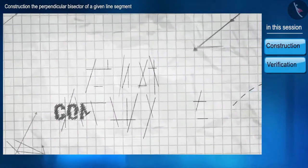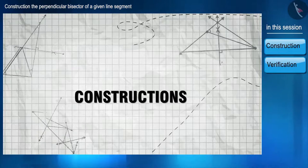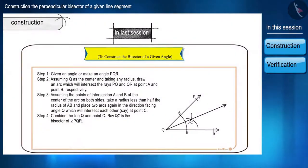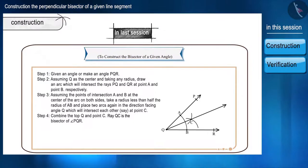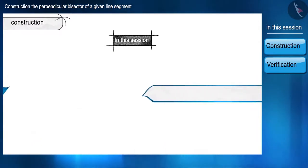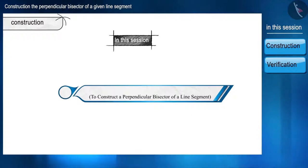Hello friends, welcome to the session on constructions. In the previous session we learned how to construct the bisector of a given angle and also proved that the construction we made is correct. In this session we will learn to construct a perpendicular bisector of a line segment and prove that the construction is correct.